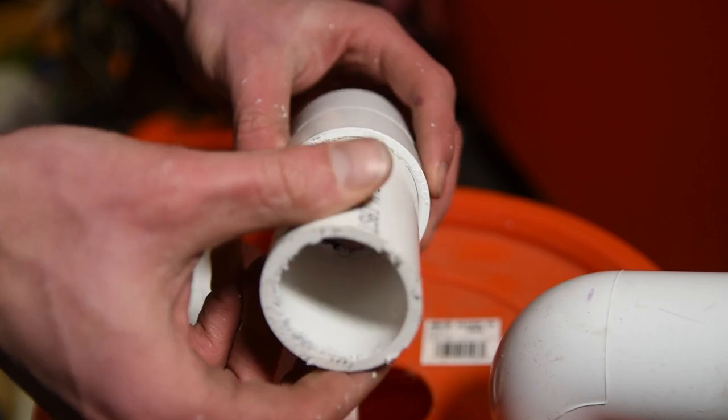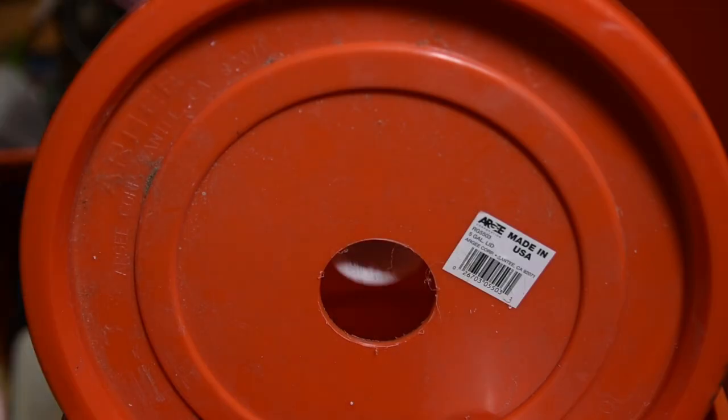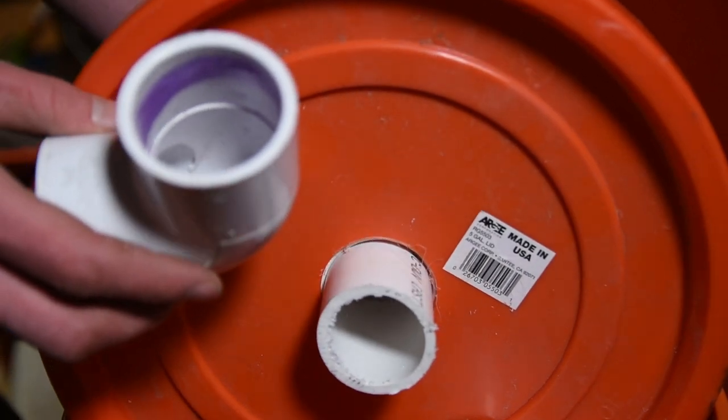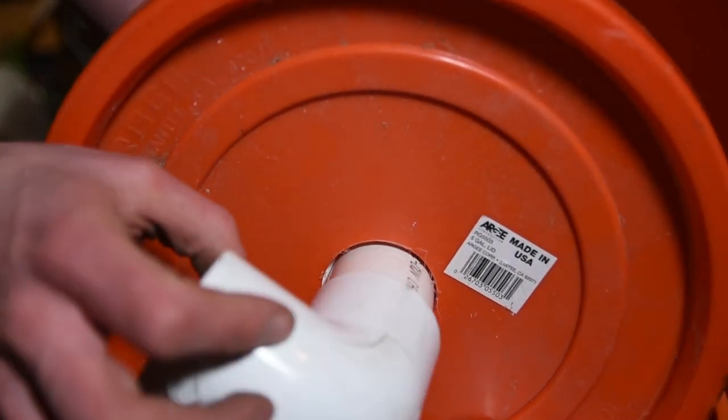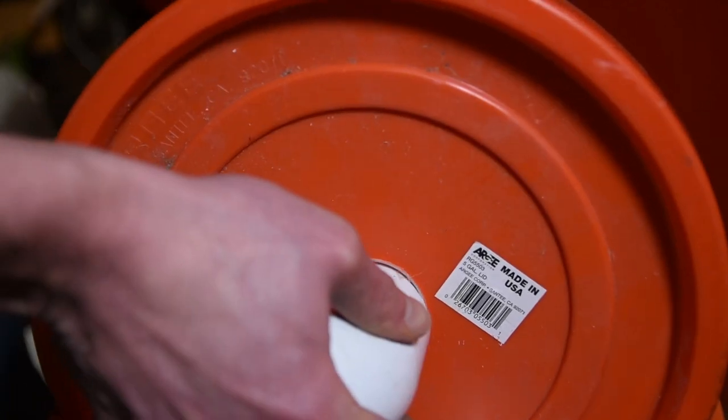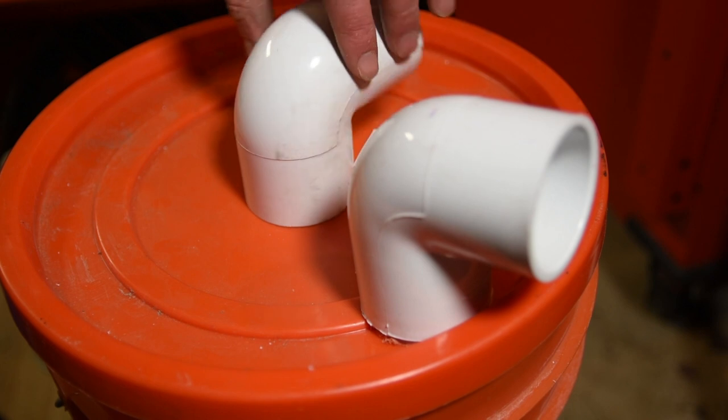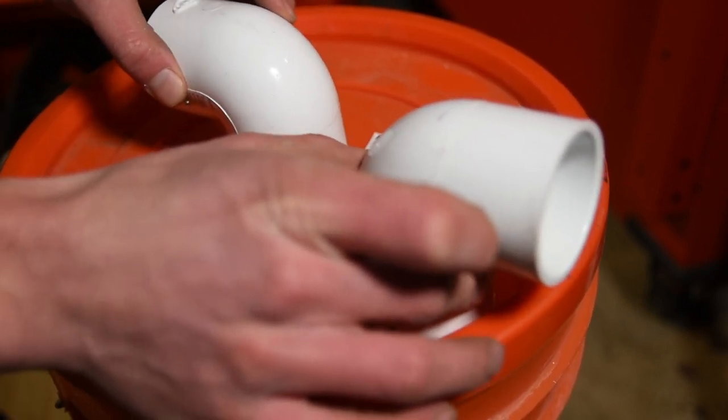Now we need to glue it all together to make it permanent. The coupler end goes on the bottom of the bucket lid and the 90-degree elbow will go on top. The coupler will give it a little bit more strength and keeps it from being pulled out. At this point it spins around, but you'll want to orient it so that way it points in the opposite direction of the other elbow, which will make it harder to tip over.